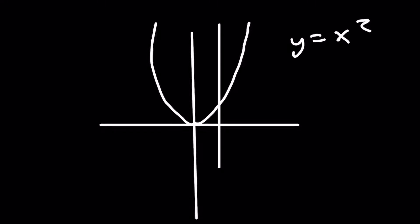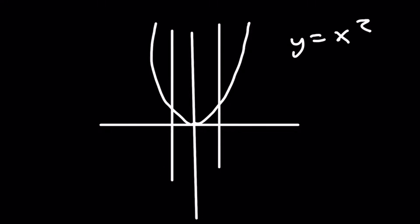When I draw it here on y equals x squared, no matter where I draw my line, it will never touch more than one point on the relation. So that means we know that y equals x squared is a function, because it doesn't touch more than one point.